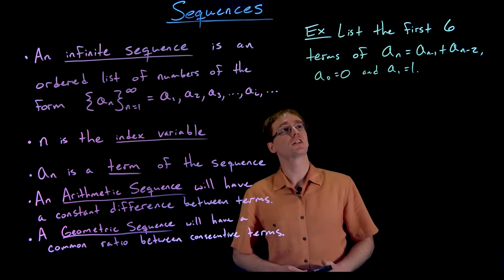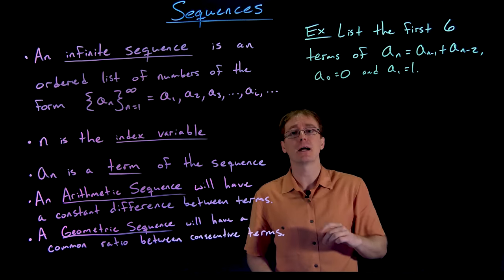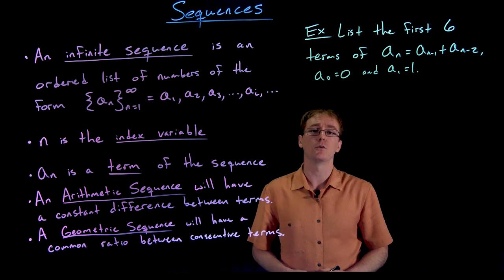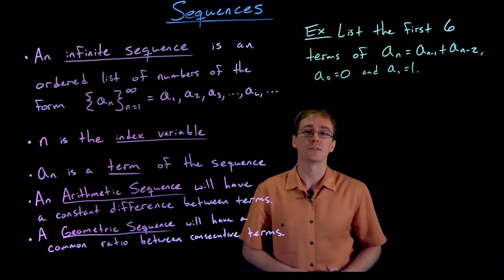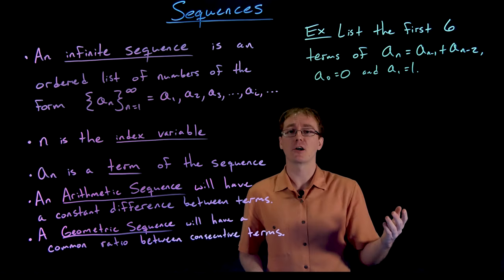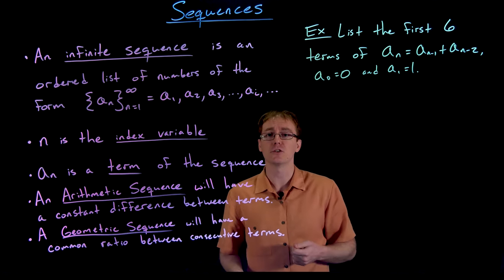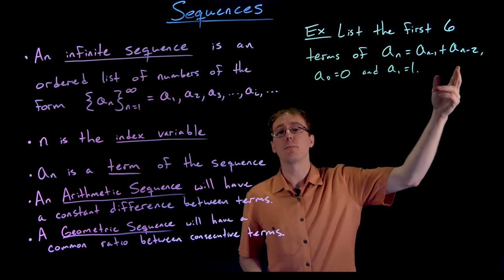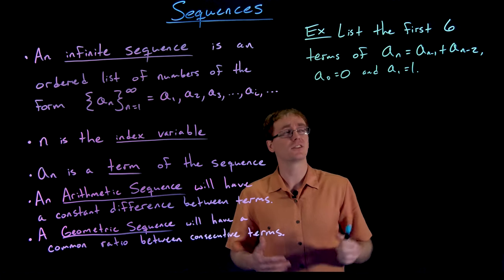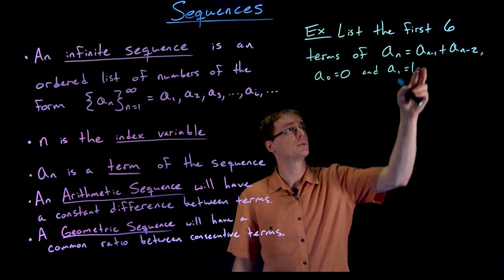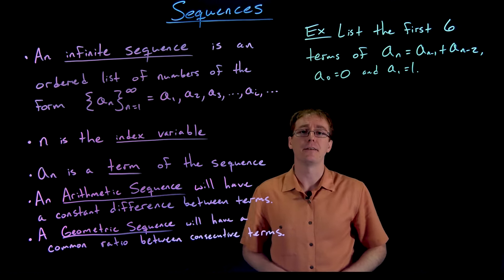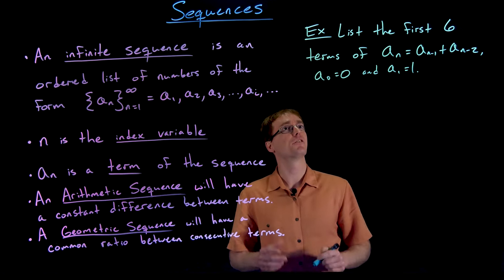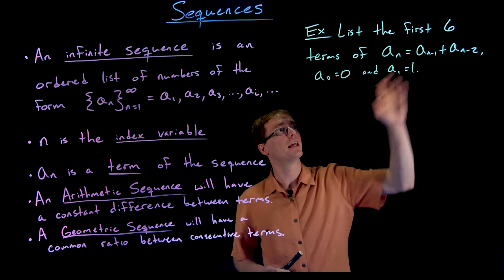Before moving on, let's look at one more very famous sequence. We want to list the first six terms of the recursively defined sequence where a sub n equals a sub n minus one plus a sub n minus two, given that a sub zero equals zero and a sub one equals one. Some of you may recognize this — it's the Fibonacci sequence. The recursive formula is a bit more complicated than before, using the previous two terms to generate the next one.